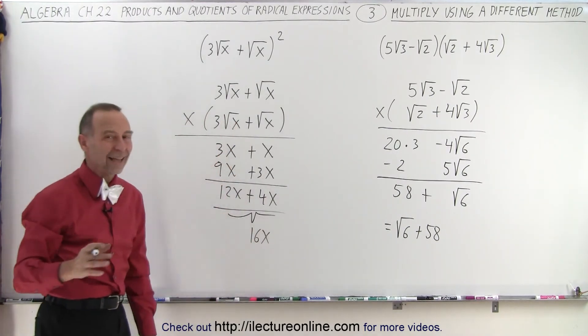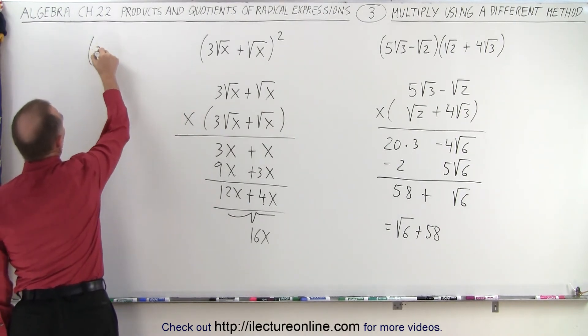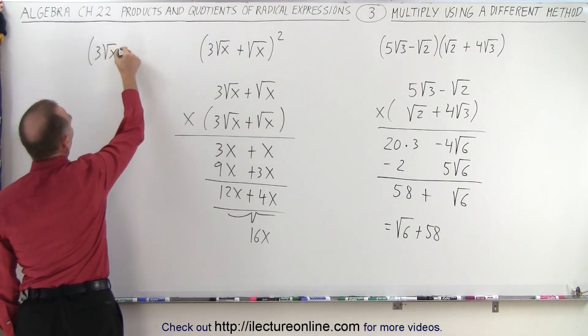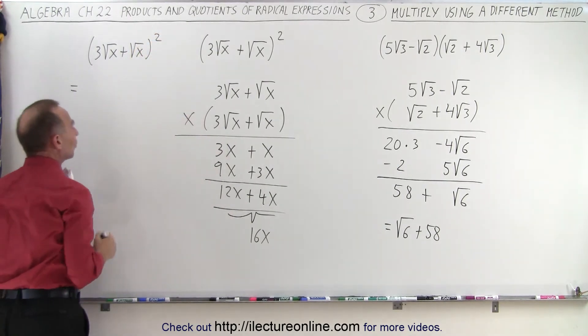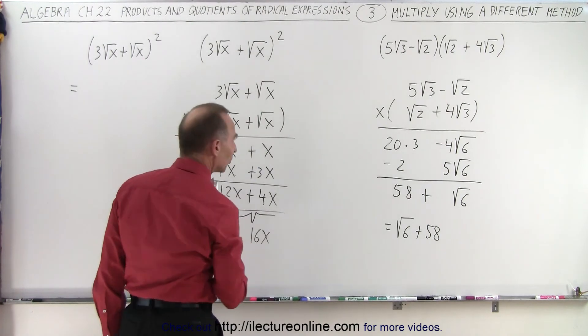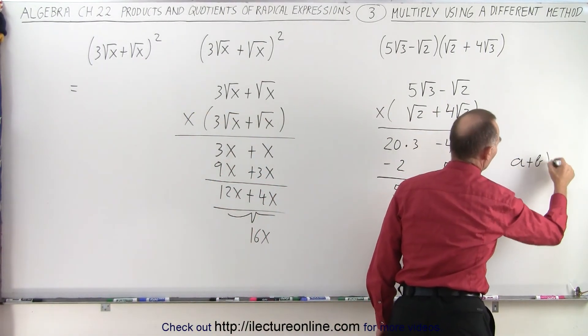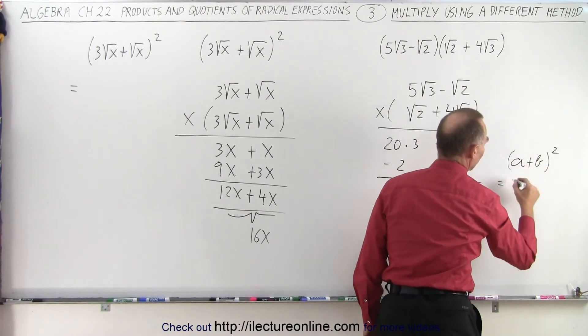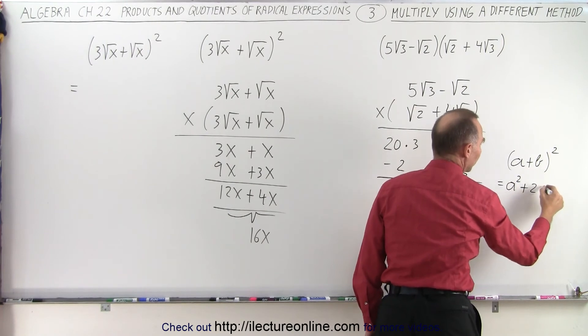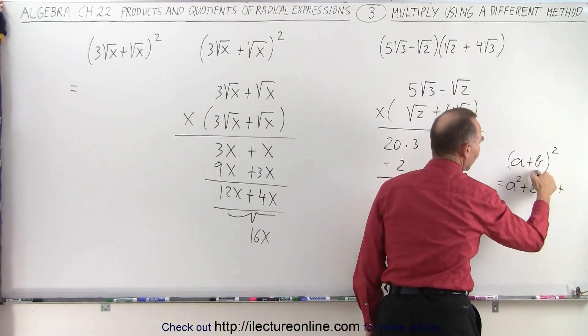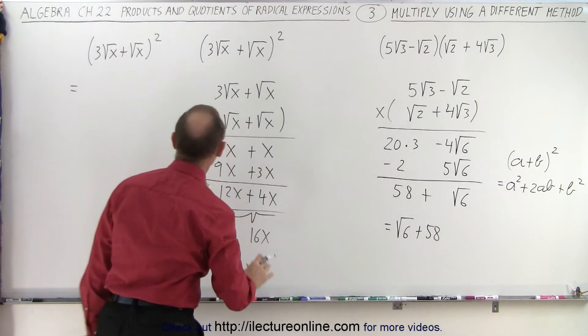Or if you like, you can take this one and write it as 3 times the square root of x plus the square root of x quantity squared. Using that same technique, if we have a plus b quantity squared, that equals the first term squared plus twice the product of those two, 2ab, plus the last term squared, b squared.